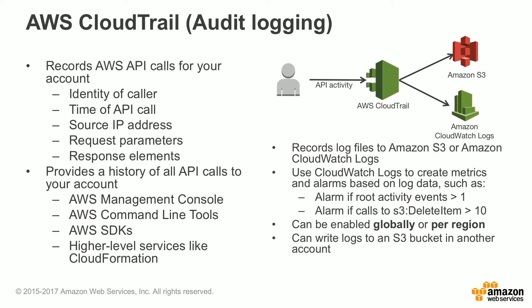You can use CloudWatch Logs to create metrics and alarms based on the log data. For example, you can create an alarm if root activity events are greater than one — in other words, if somebody logs in using the root credentials into your account. You can also set up an alarm for things like deleting items out of S3, so if you have a critical S3 bucket and more than 10 item deletion events occur, you can generate an alarm. You can make these alarms customized to the actions you consider high risk and that you want to be alerted on.